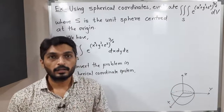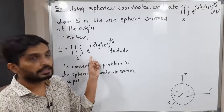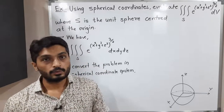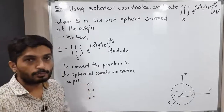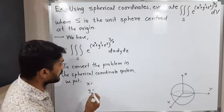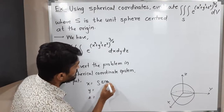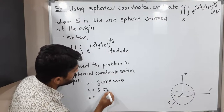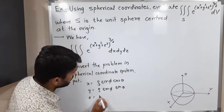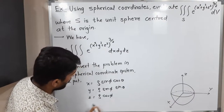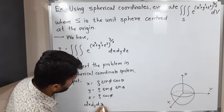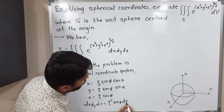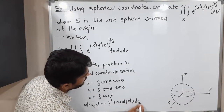I have drawn that sphere also. We have to convert this problem into the spherical coordinate system. We use the standard substitution: x = ρ sin φ cos θ, y = ρ sin φ sin θ, and z = ρ cos φ. Then dx dy dz = ρ² sin φ dρ dφ dθ.